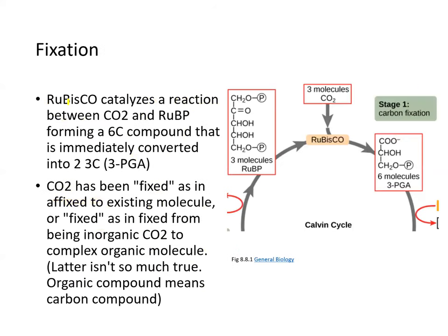Let's look at the fixation step more closely. Rubisco catalyzes the reaction between carbon dioxide and ribulose bisphosphate. One molecule of rubisco and one molecule of RuBP are shown, but stoichiometrically three molecules are required to finish the cycle. Similarly, only one molecule of CO2 is shown, but it actually uses three molecules. This is the carbon fixation step — rubisco enzyme is fixing the CO2 onto ribulose bisphosphate.